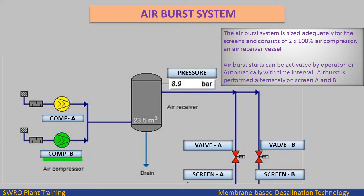The air burst system is sized adequately for the screens and consists of 2×100% air compressors and an air receiver vessel. Air burst starts can be activated by the operator or automatically at set time intervals. Air bursts are performed alternately on screens A and B.